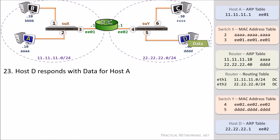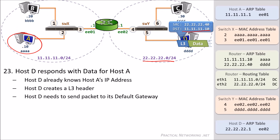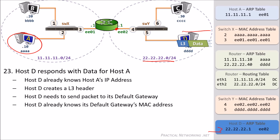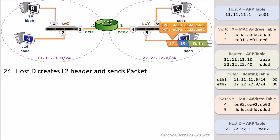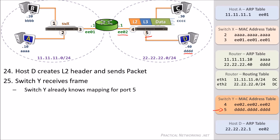Host D creates the response data to send back to Host A. Host D already knows Host A's IP address and is able to build a Layer 3 header with a source of Host D's IP address and a destination of Host A's IP address. Host D can compare the destination IP with its own network to determine that the final destination is on a foreign network, which means the packet needs to be sent to the default gateway next. Host D also already has an entry in its ARP table for its default gateway's MAC address and can use this to build a Layer 2 header with a source MAC of DDDD and a destination MAC of EEE02. The frame will arrive on SwitchY on port 5, and SwitchY will use the destination MAC address to determine that this frame needs to be sent out port 4.